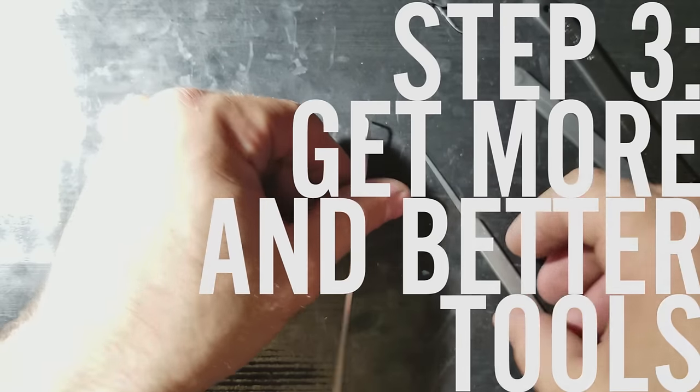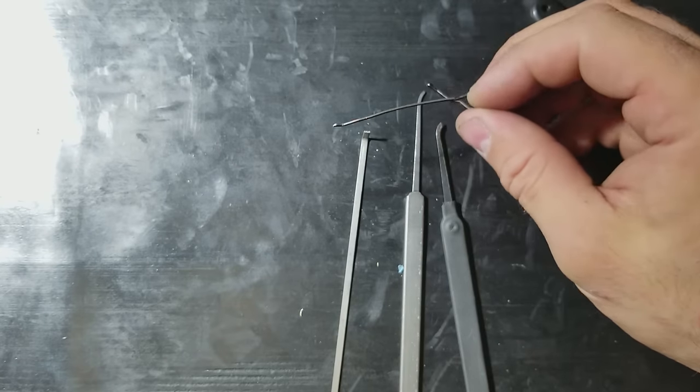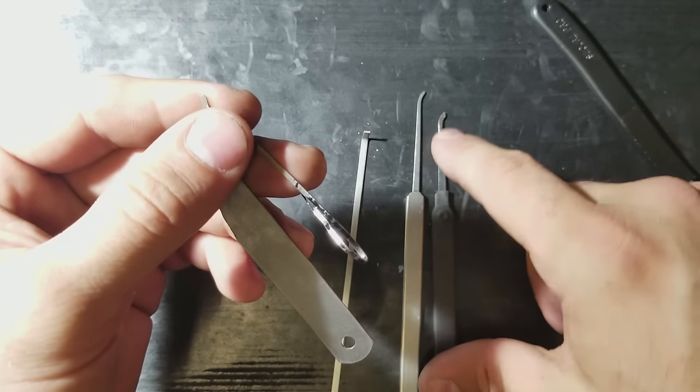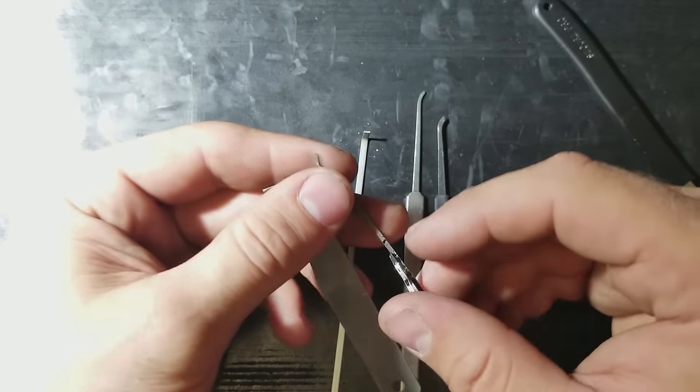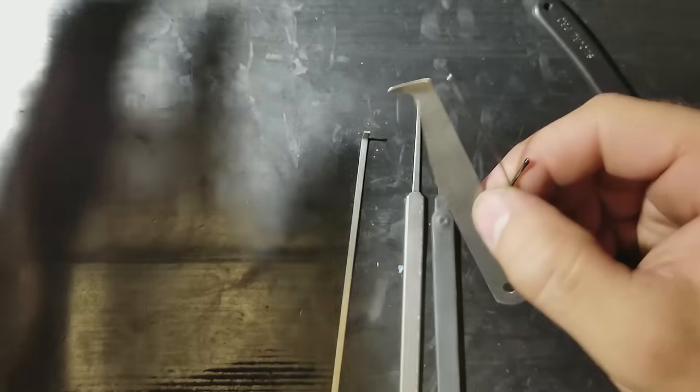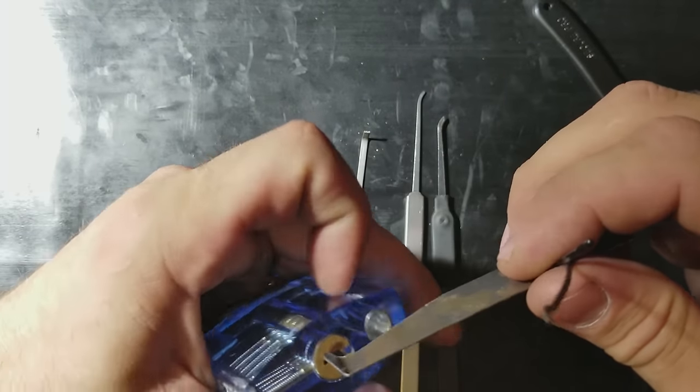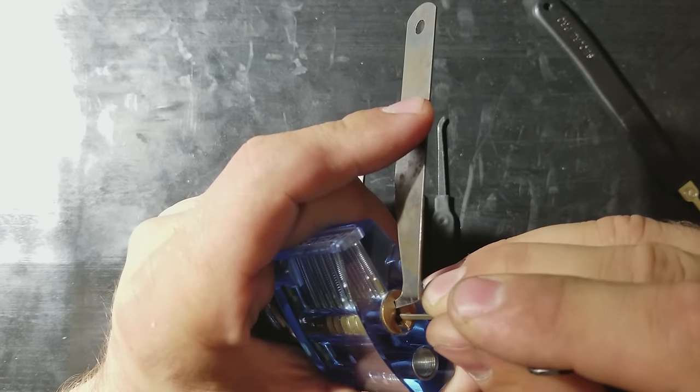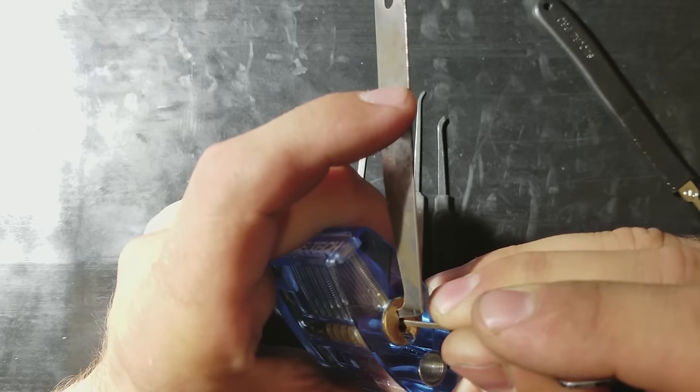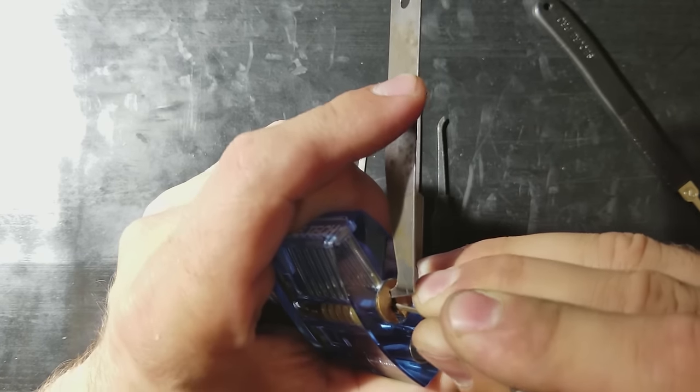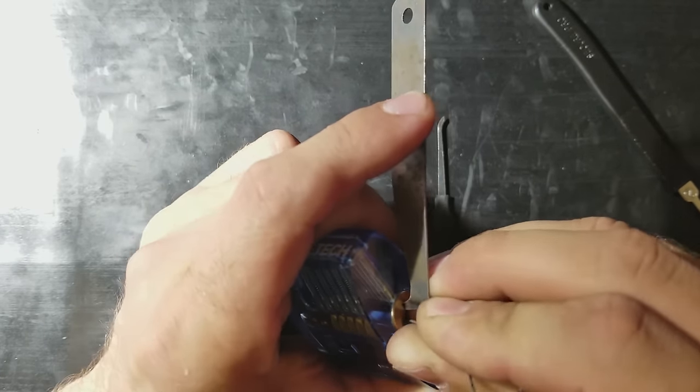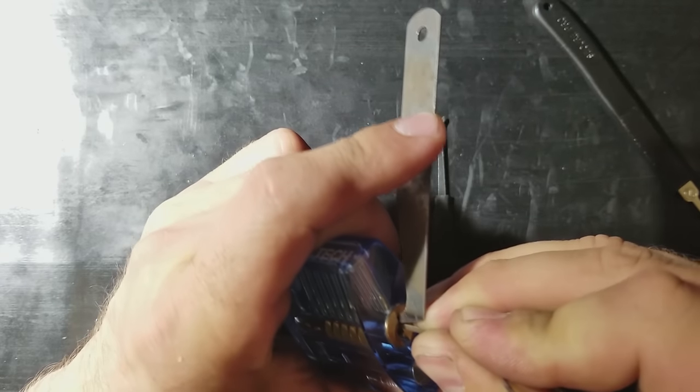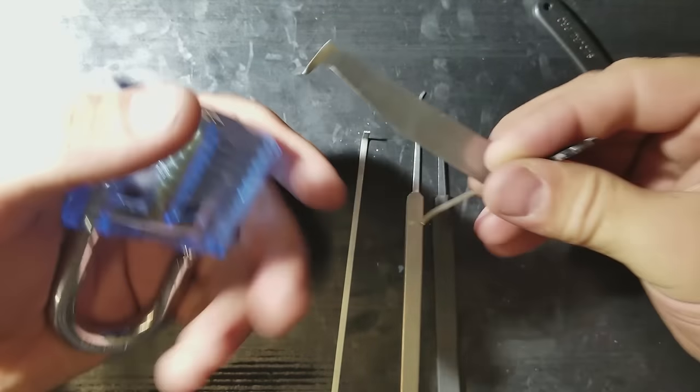The next thing that I do in my progression of lock picking is I moved on to better tools. So, I actually don't recommend that you start with homemade tools unless you have to. Buying a very basic set of picks is really worthwhile and I like picks that are fairly thin. But this is not a bad place to start if you have that practice lock. We can see if it can be done with these tools. So, there we go with some homemade tools.